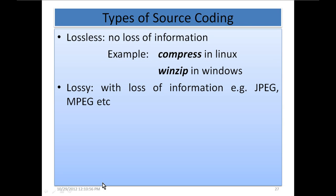Now, types of source coding: lossless source coding and lossy source coding. In lossless source coding there is no loss of information — examples include compressed and uncompressed utilities in Linux or Unix, and WinZip in Windows. For lossy source coding there is loss of information — examples include JPEG and MPEG.